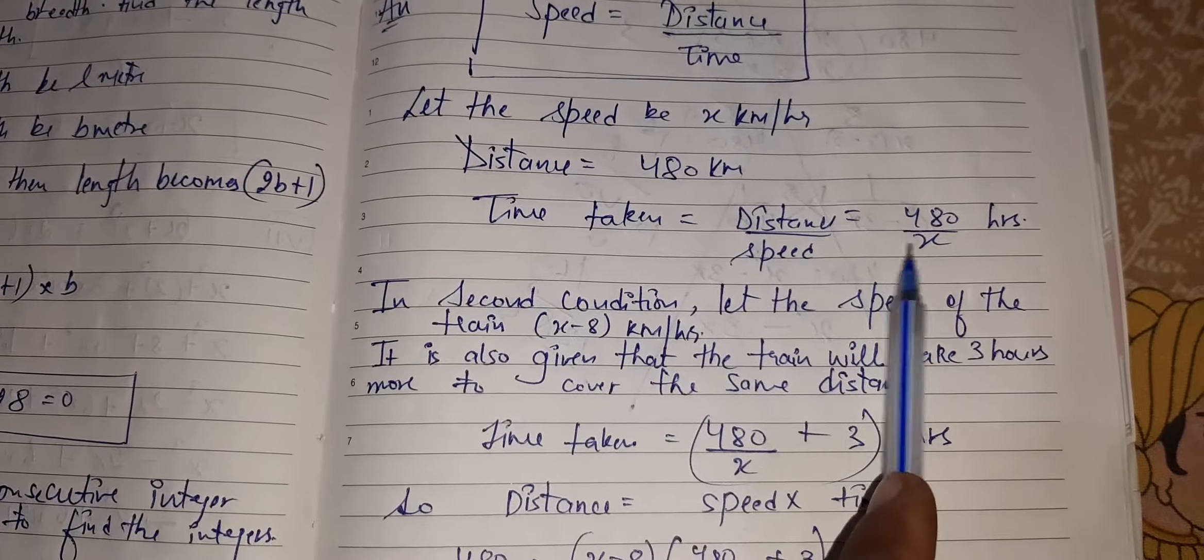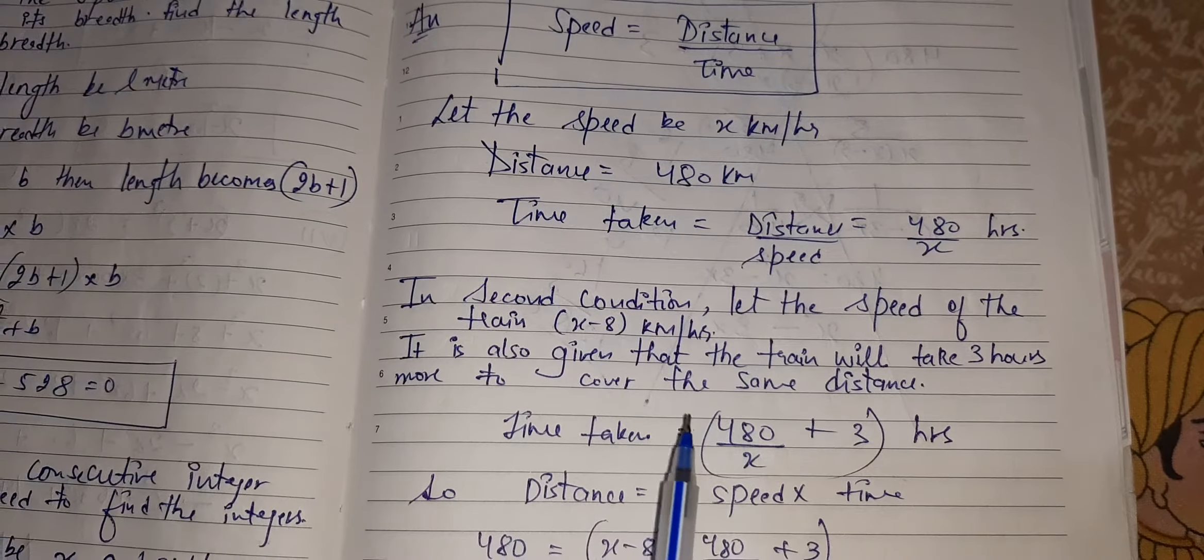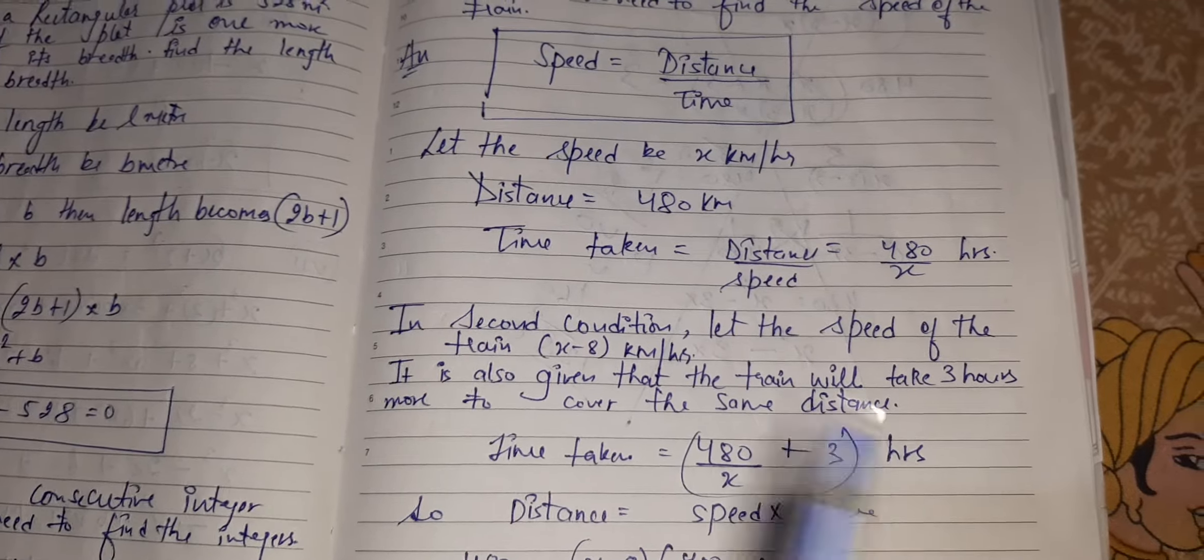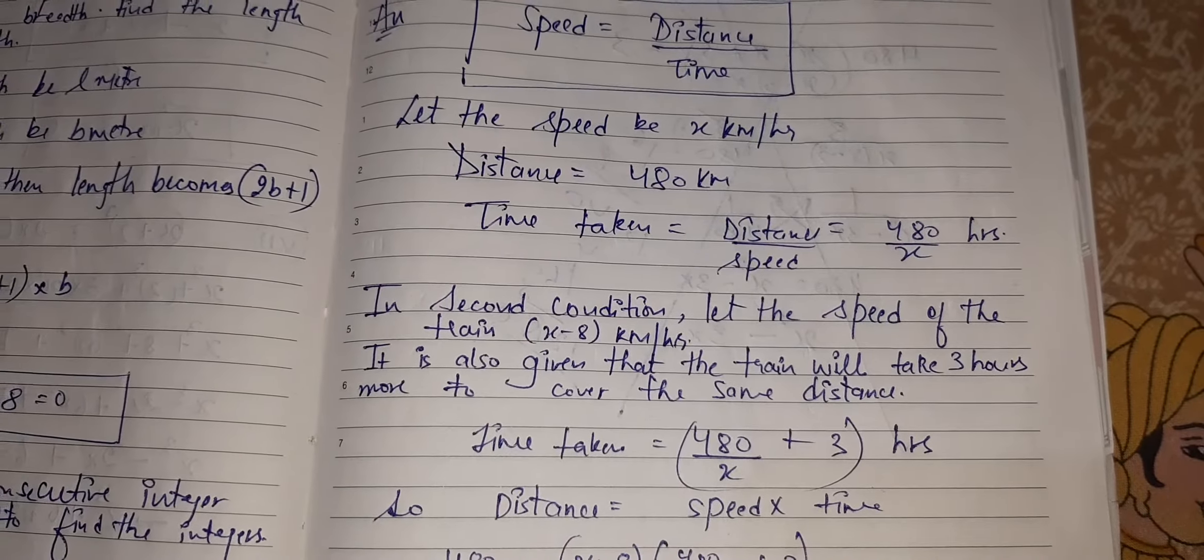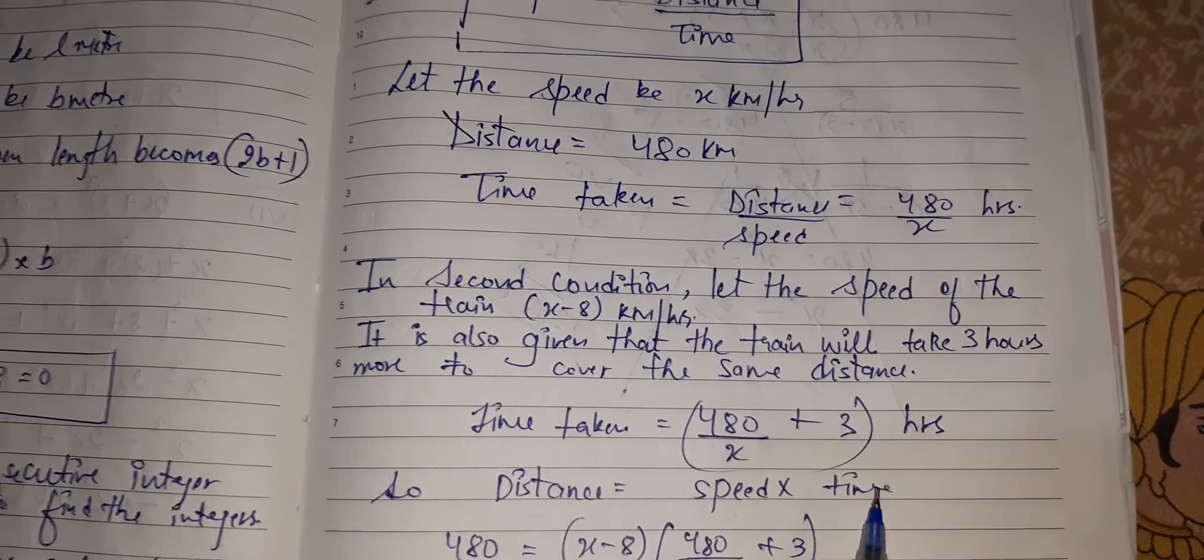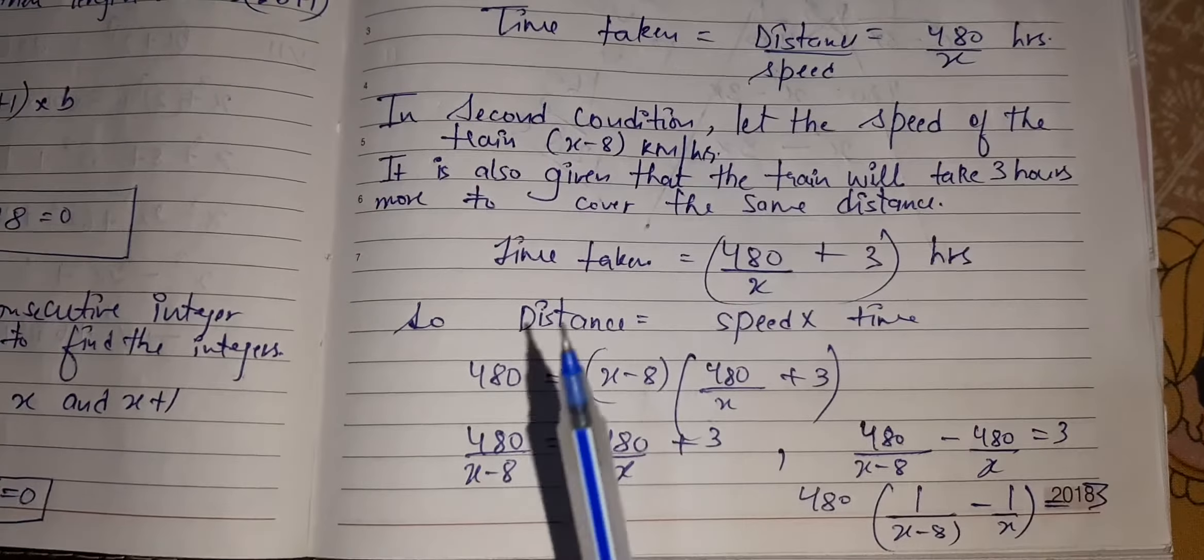So what was the earlier time T1? 480 upon X. It will take 3 hours more to this time. T2 I have got. Please keep this in mind. The new time I have got, 480 upon X plus 3. Now, I know the formula, distance is equal to speed into time.